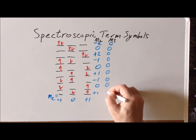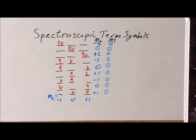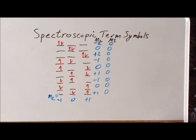We've now worked out all 15 microstates and tabulated the big M sub L and big M sub S values for each. In the next step, we will make a comprehensive table of those values and show how to use that table to determine what the spectroscopic term symbols actually are.